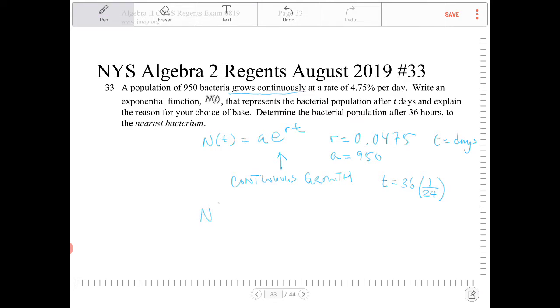So we have everything. N of 36 over 24 is equal to 950E to the 0.0475 to the power of 36 over 24.